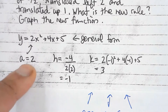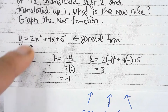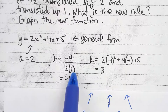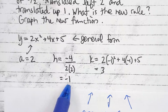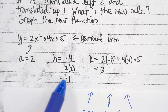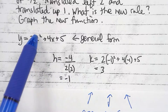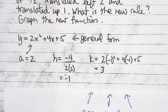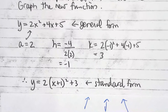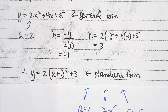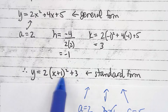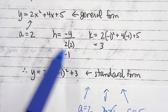The a is exactly what it is — we already said it's 2. To get the h, the formula is negative b divided by 2a, giving h equals negative one. To get k, we substitute h into the rule and get k equals three. So a is 2, h is negative one, k is three. The standard form is y equals 2 times (x plus 1) squared plus 3. You don't have to write out the full standard form — you just need the values 2, negative one, and three.